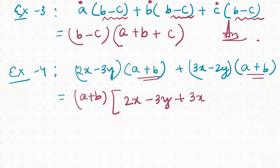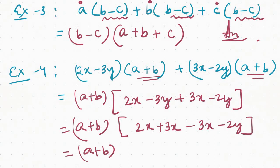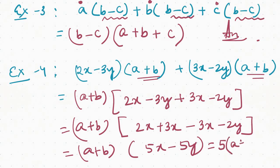x minus 2y. So how do I do this? I will arrange this: 2x plus 3x minus 3x minus 2y. Then I will arrange this as it fits — as an example of 5x minus 2y.